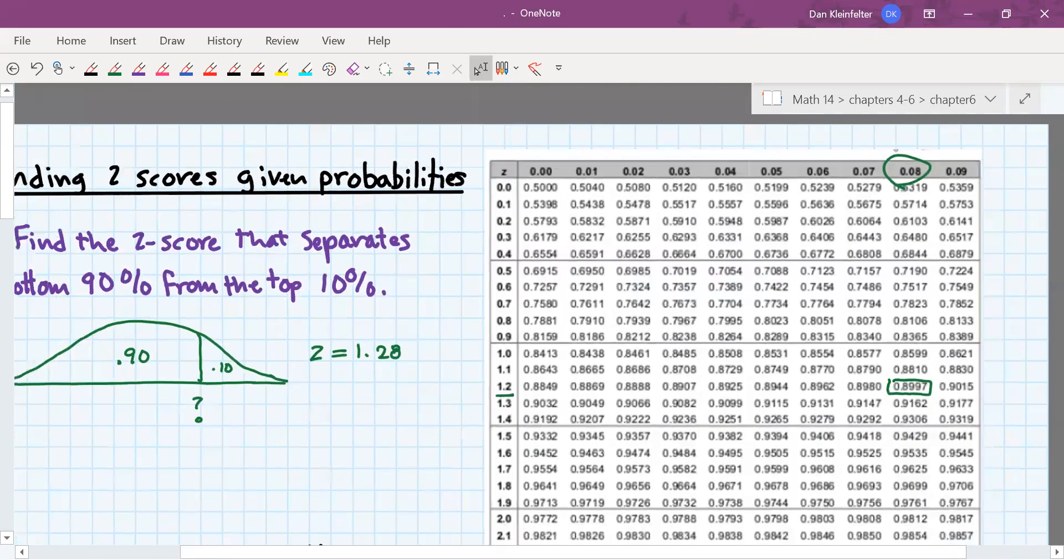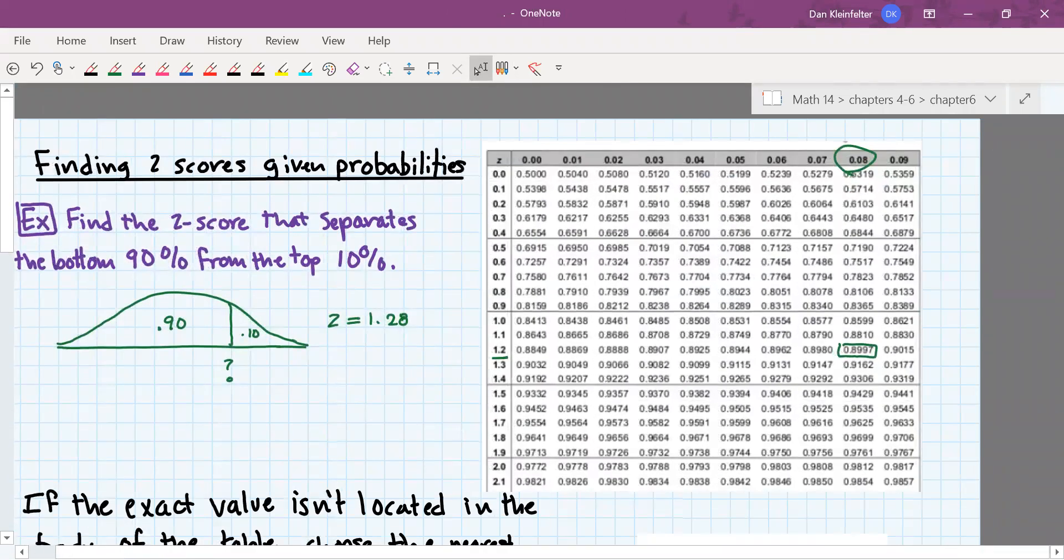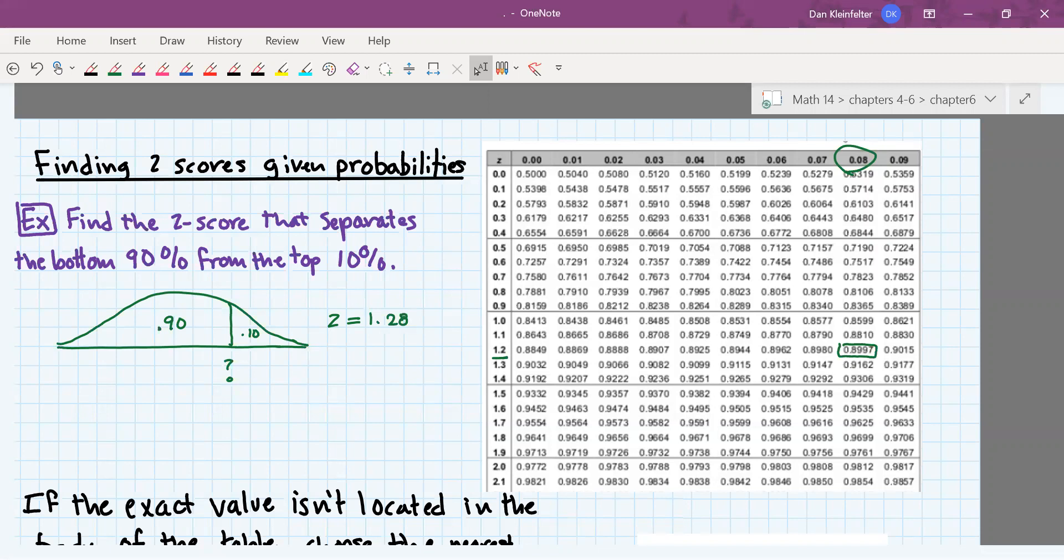Again, we're given the probability, which is 0.9, and we wanted to work backwards to get the value for Z. We found that our Z was 1.28.